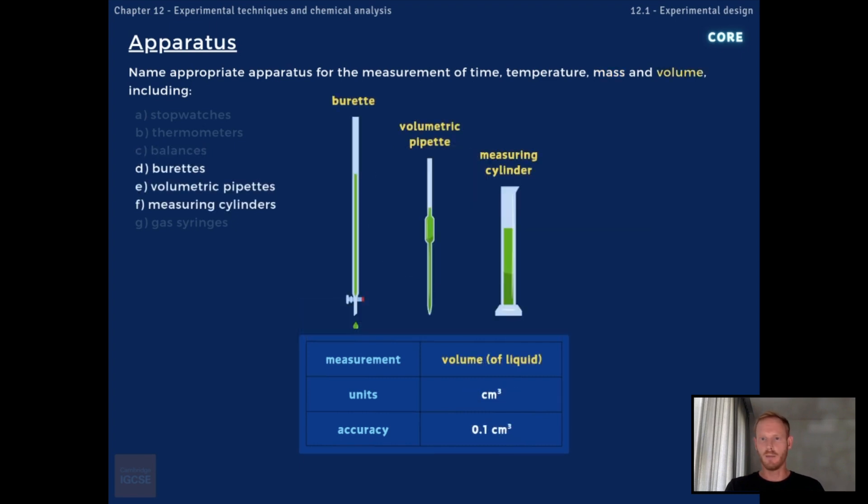The volume of a liquid can be measured using a burette, a volumetric pipette or a measuring cylinder, depending on the level of accuracy required. All three generally give readings to the nearest 0.1 cubic centimetre, but measuring cylinders are much less precise than the other two. Volumetric pipettes measure and deliver fixed volumes of liquid, while burettes are used to dispense variable volumes in titration experiments. See topic 12.2 for more details.